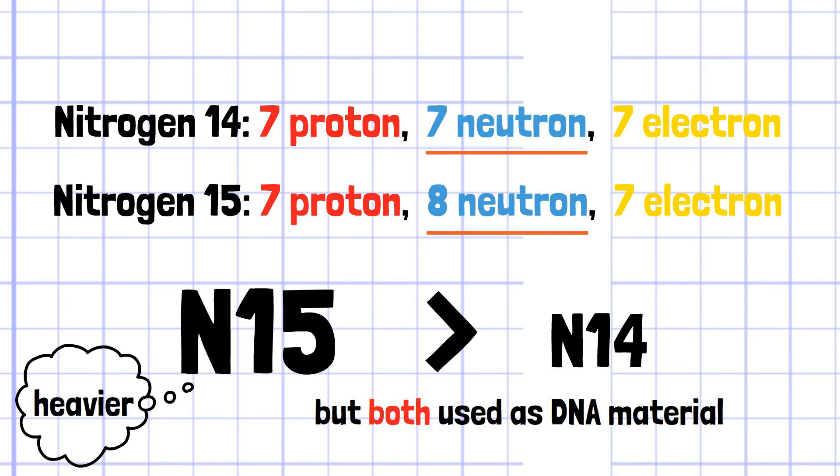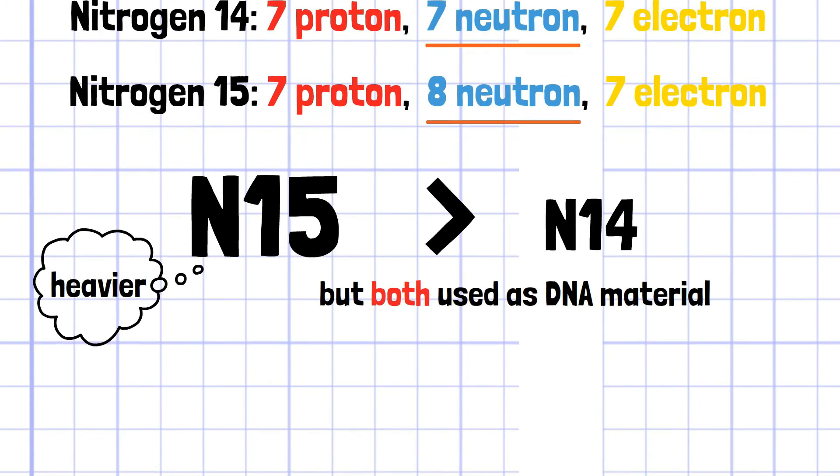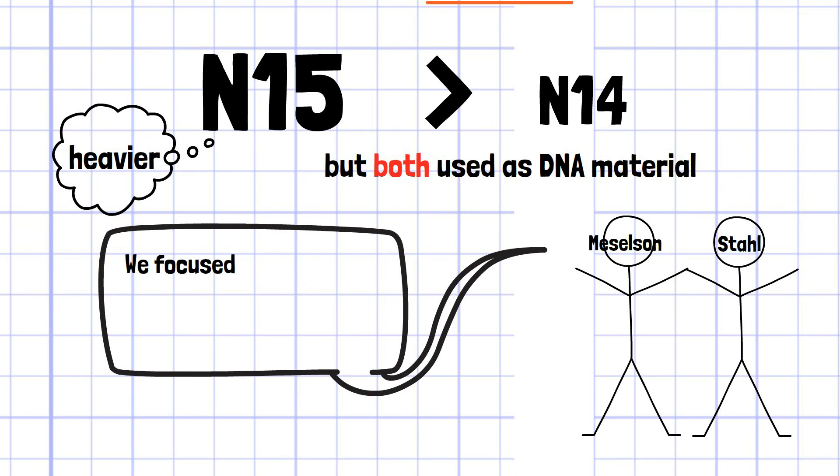But at the same time, as they are distinguishable by their mass, it is possible to detect them separately. Meselson and Stahl utilized this mass difference in order to prove semi-conservative replication.